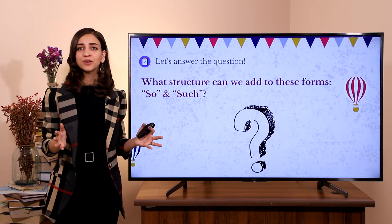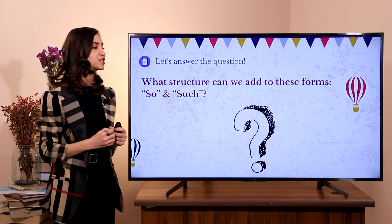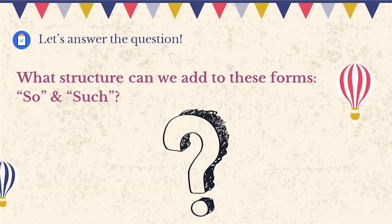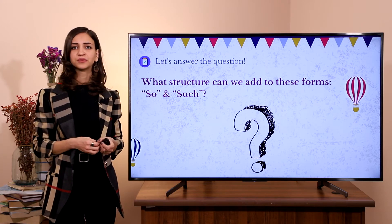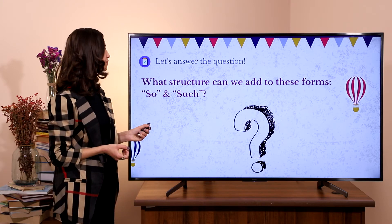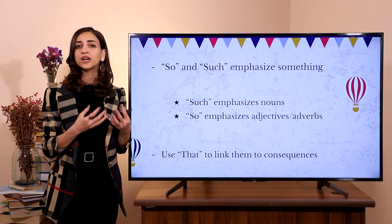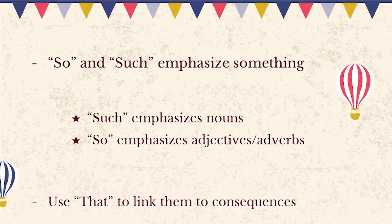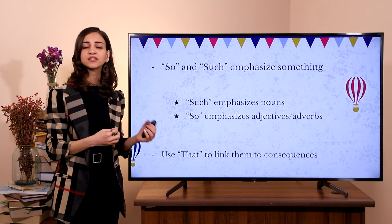Now, let's imagine that you should get scores and answer these questions. What structure can we add to 'so' and 'such'? Of course, we can add 'that' to link them to consequences. When we are using 'that', it shows that something has happened — we can see the result. When we add 'that', we can see the outcome and the consequences. So that, such that.